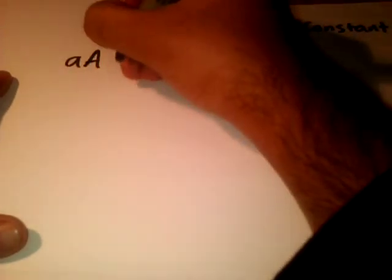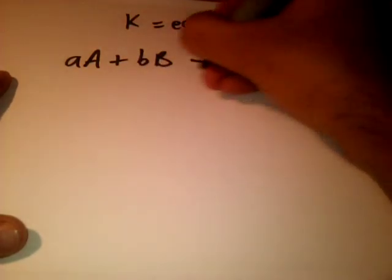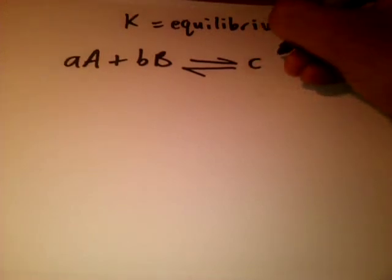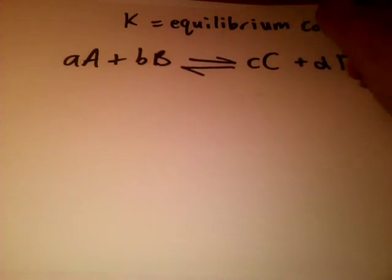Imagine they're all gases in a reversible reaction at a state of equilibrium. So aA + bB ⇌ cC + dD. Remember they will all be gases.